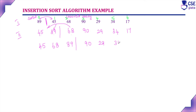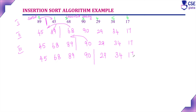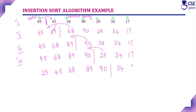Third iteration: compare 90 with the sorted list. 45 is less, 68 is less, 89 is less, and 90 occupies its place at the end. Sorted list is now 45, 68, 89, 90; unsorted list is 29, 34, 17. Fourth iteration: compare 29 with all sorted elements. 29 is less than 45, so 29 is placed at the front, followed by 45, 68, 89, 90. Unsorted list is now 34 and 17.